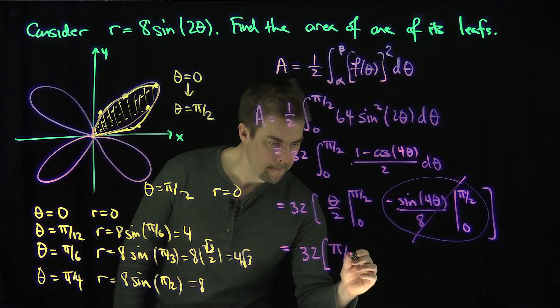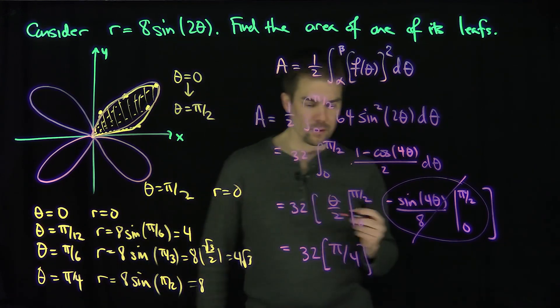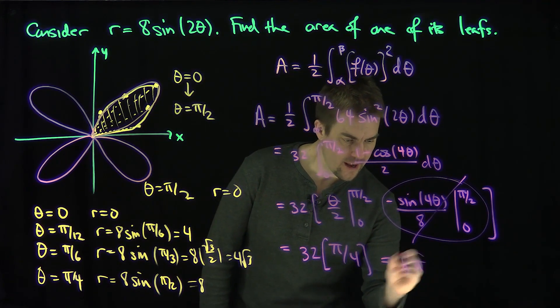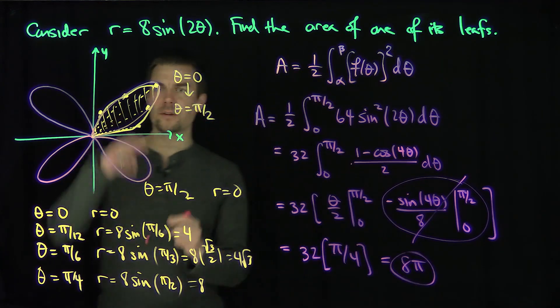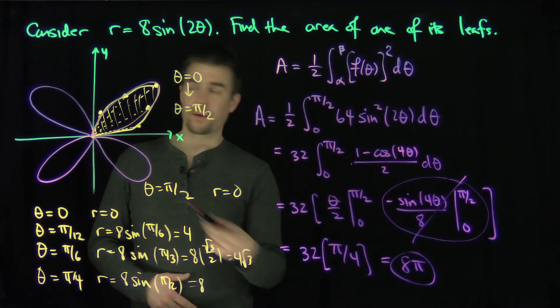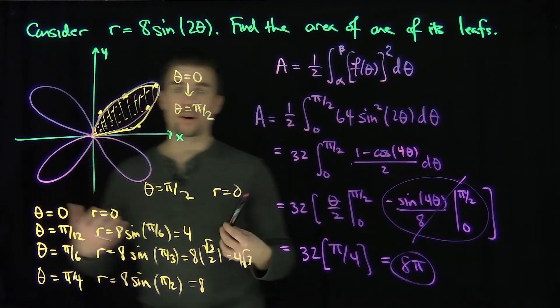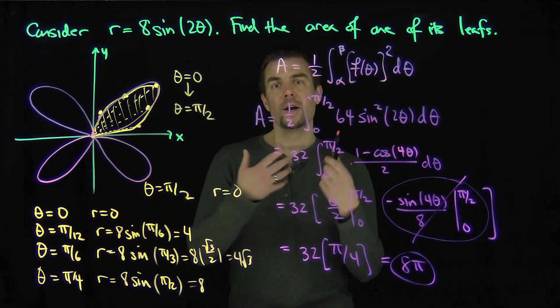32 over 4 is equal to 8. So this is going to be 8 pi. And 8 pi is the area in this leaf. Of course, if you just multiply this by 4, 32 pi will be the area enclosed by this entire curve. So the area of one leaf is 8 pi using this formula.